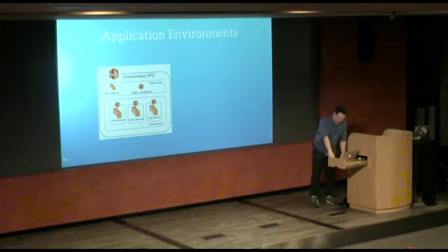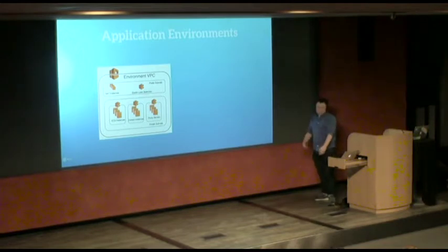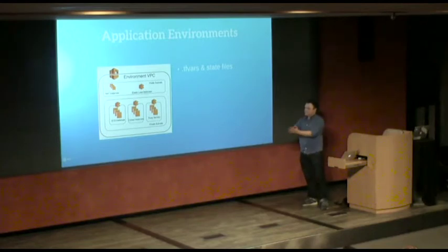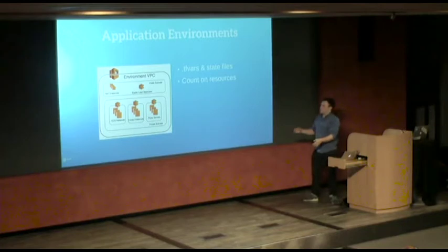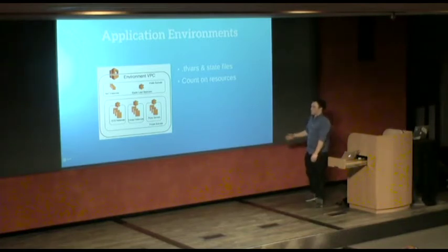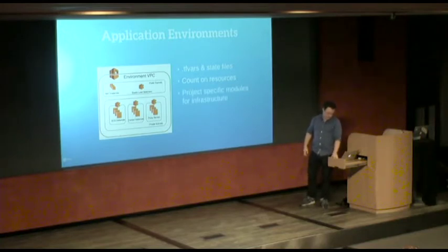So it's used for shared infrastructure, using shared modules. I've already talked about that. So the application environments, again, we're using modules, we're reusing them, and we're using the TFvars and the state files here because we're wanting to have different environments with different characteristics. So we use counts and resources to scale the size of auto-scaling groups, but also instances and things like that. So if we don't want, for example, any proxy servers in our development environment integration, we just put a count of zero. It's not going to create that resource.